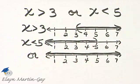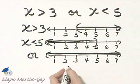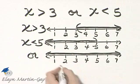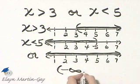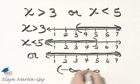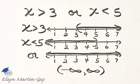So if I shade the entire number line, what would be my answer in interval notation? I have shaded from negative infinity to infinity. Every single real number is a solution to the original compound inequality.